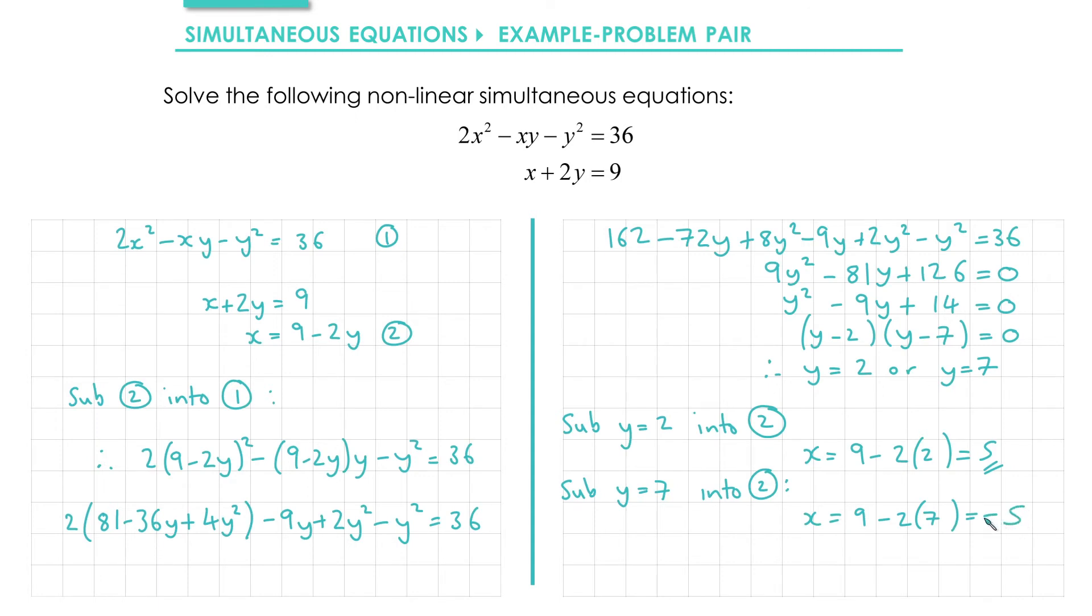Finally, we'll make it explicitly clear that these two solutions come in pairs. So we get x = 5, paired with y = 2. Think of them as pairs of coordinates if you like. And x = -5, paired with y = 7.